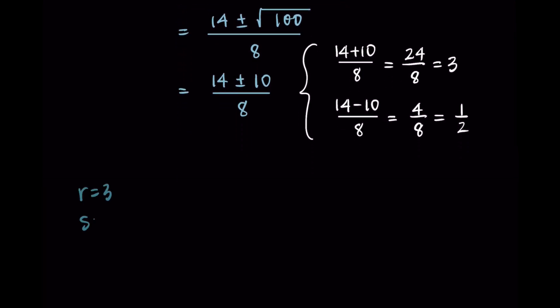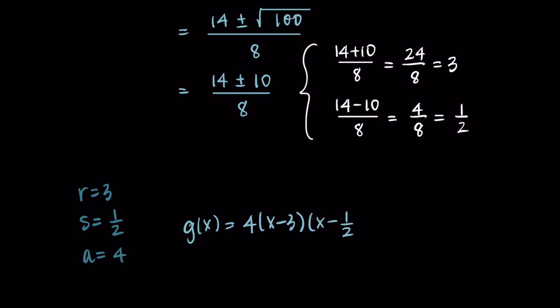Letting r equal 3, s equal one half, and remembering that a equals 4, I have everything I need to put this into factored form. So g of x equals 4 times x minus 3 times x minus one half. And this is in factored form.